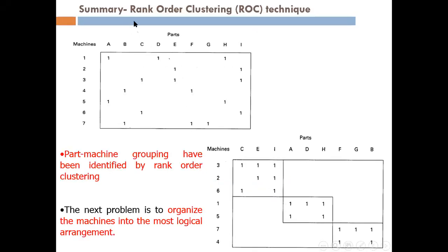To summarize Part 1: we used the rank order clustering technique for grouping the parts and machines. This was the initial interaction of the parts with the machines. After applying rank order clustering, we arranged the parts and machines into a cell.